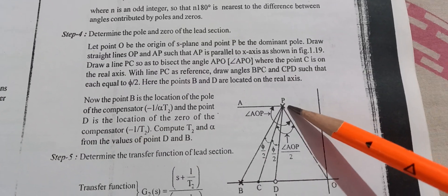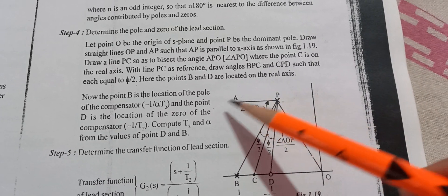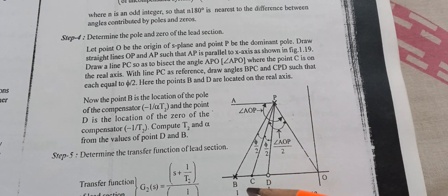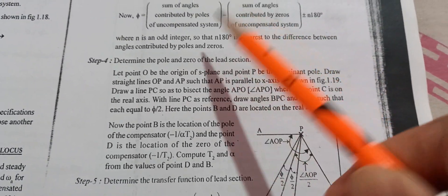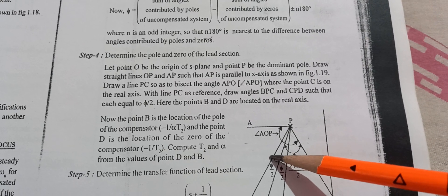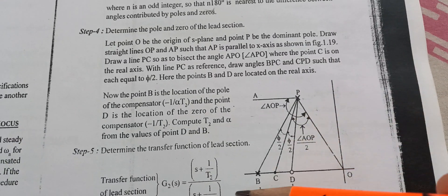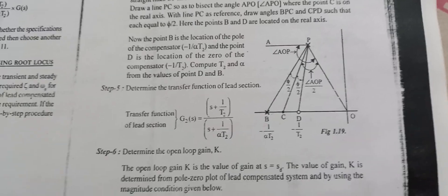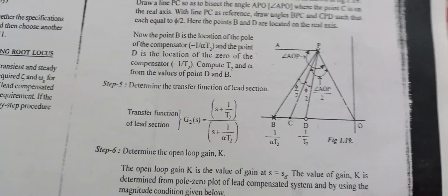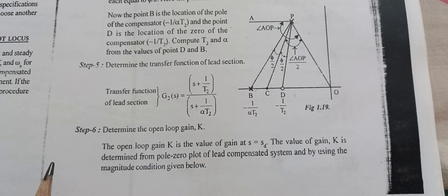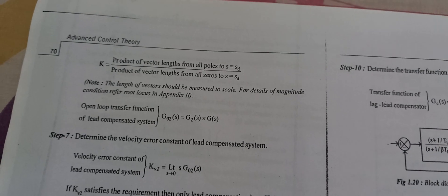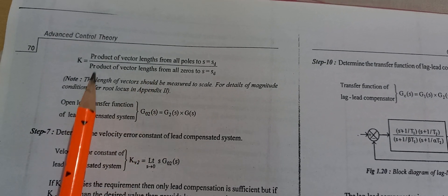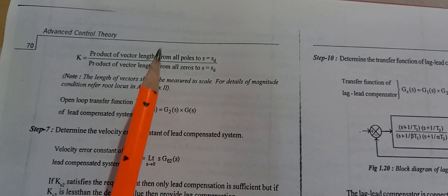Now we have the dominant pole on the horizontal line, and we calculate the total angle. This gives us the bisection. The bisection angle is phi divided by 2. Using the bisection, we can multiply the lengths to get the PLC and K values.